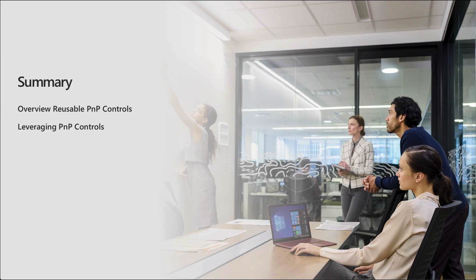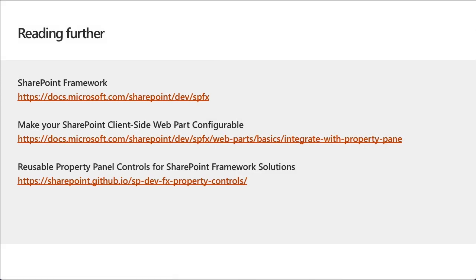In this module we looked at working with the web part property pane. We saw how to configure and customize the property pane with the out-of-the-box controls included in the SharePoint Framework, how to create our own controls when we needed something custom, and how to use the reusable controls available as part of the PnP open-source community library. Additional links are included to learn more about working with the property pane on SharePoint Framework client-side web parts and creating reusable property pane controls for your SPFx solutions.